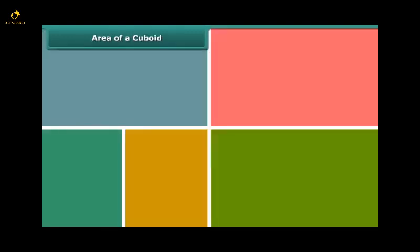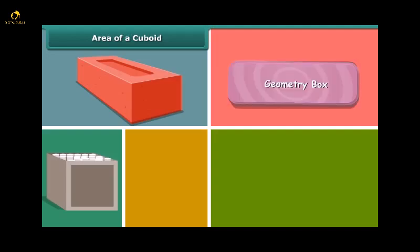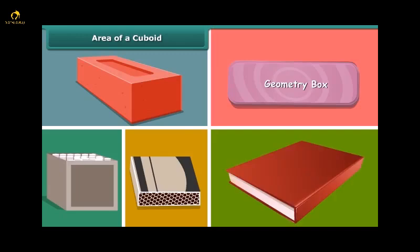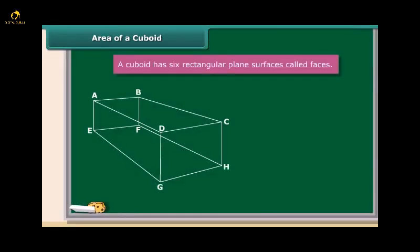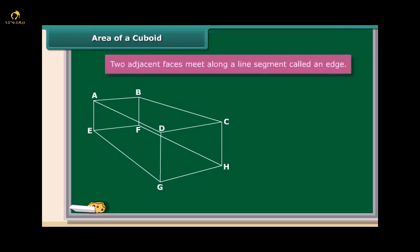Guess the shape of a brick, chop box, geometrical box, match box, and a book. That's right — these are all examples of cuboids. A cuboid has 6 rectangular plane surfaces called faces: ABCD, ABEF, BCHF, EFHG, ADGE, and DCHG. Two adjacent faces that meet along a line segment is called an edge. A cuboid has 12 edges in all.